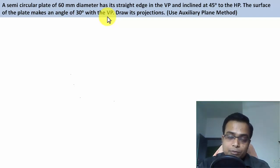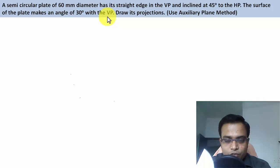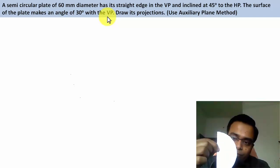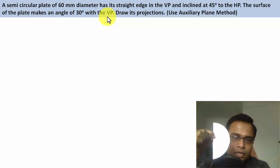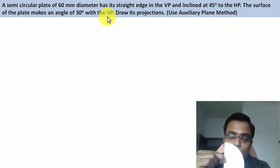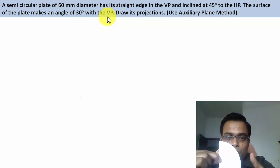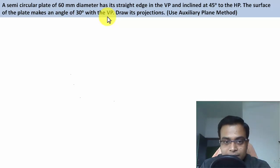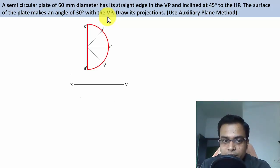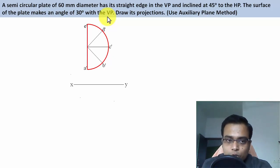Since the surface is making an angle with the VP, our initial assumption is that the entire surface is currently resting on the VP. We then need to determine from where we can see the true shape of this surface — obviously it's from the front — and that's exactly what we're going to construct now. Let's name each part and take a look from the top.